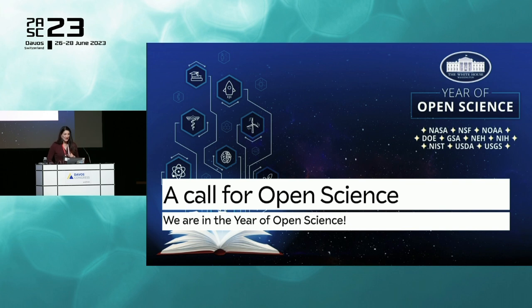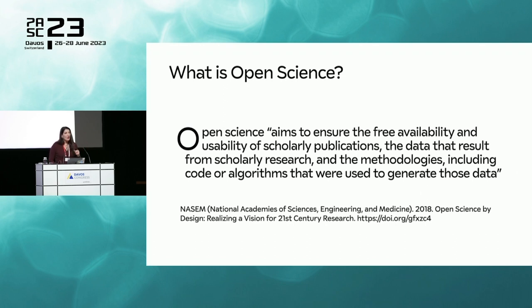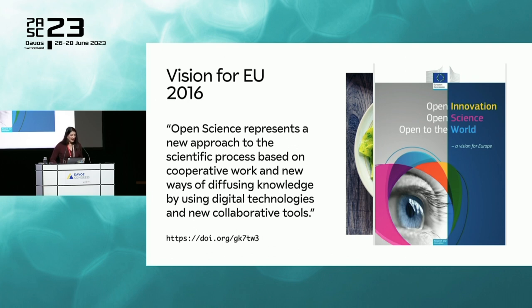I wanted to mention there is a call for open science. 2023 has been called the year of open science in the US, with the participation of several federal agencies and many other organizations. The National Academy definition from 2018 says open science aims to ensure the free availability and usability of scholarly publications and the data that results from scholarly research methodologies, including code. But I want to highlight that this definition focuses narrowly on the products of research — the stuff — not the people. In many ways Europe has been ahead, and the European definition focuses on the process as cooperative work.